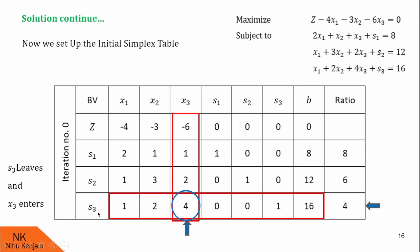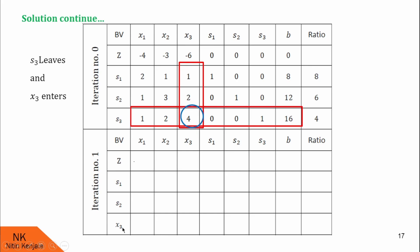In the next iteration of this table, we replace s3 by x3. We divide the key row by the key element: 4 by 4 becomes 1, this becomes 1 by 4, 2 by 4 is 1 by 2, 0 by 4 is 0, 0 by 4 is 0, this will be 1 by 4, and 16 by 4 is 4. We discard the previous ratio values and will get new ratio values in iteration number 1. Next, we will use this row to bring zeros at the required positions.